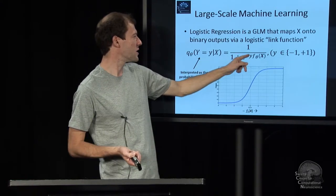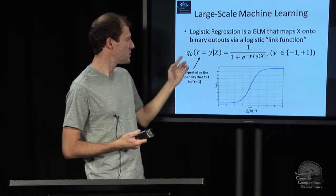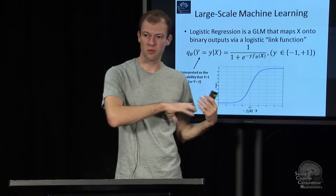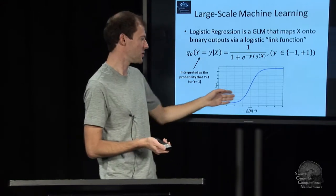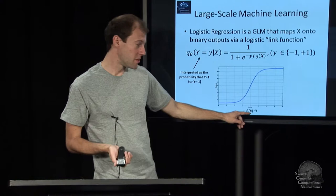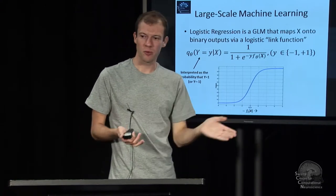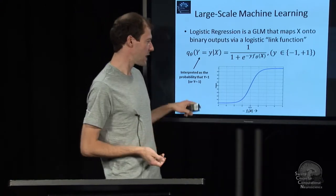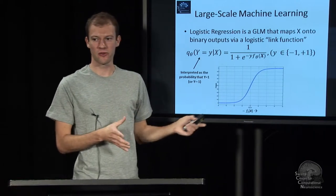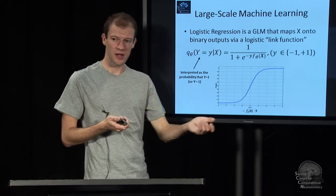If you plug plus 1 in here, you can interpret this as the probability that this is the positive class that you're looking at for some data. So basically, instead of a distance from a hyperplane, what you get is a probability. And it behaves in this kind of way, if you vary the underlying data.